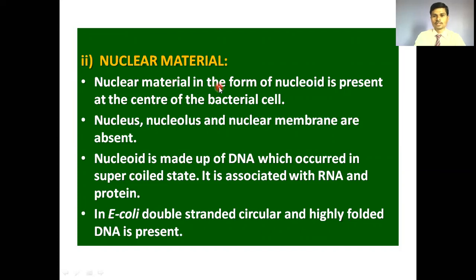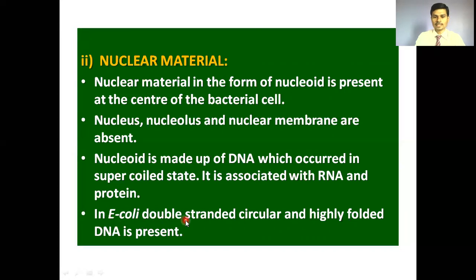The nuclear material is in the form of a nucleoid present at the center of the bacterial cell. The nucleolus and nuclear membrane are absent — hence it is a prokaryotic cell. The nucleoid is made up of DNA in a supercoiled state, also associated with RNA and protein. In E. coli, the DNA is double-stranded, circular, and highly folded — meaning it is supercoiled.